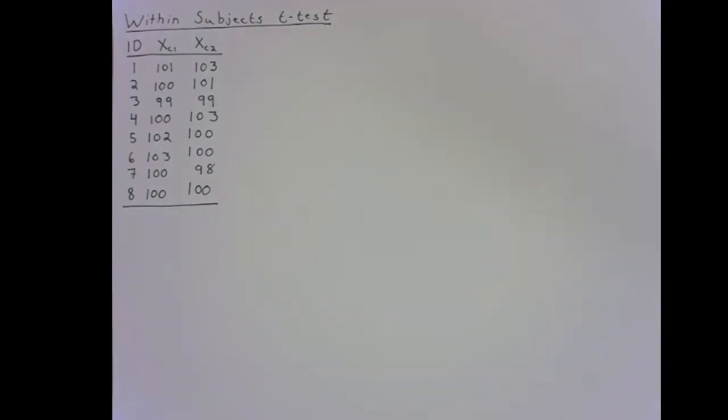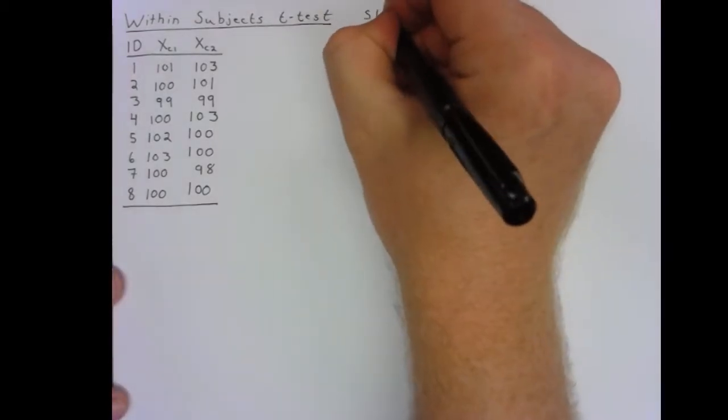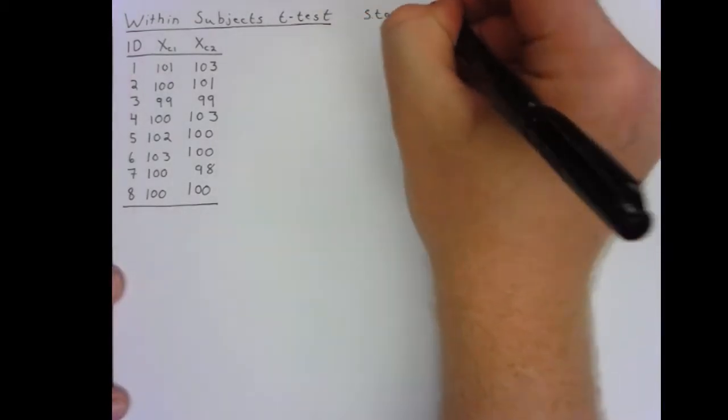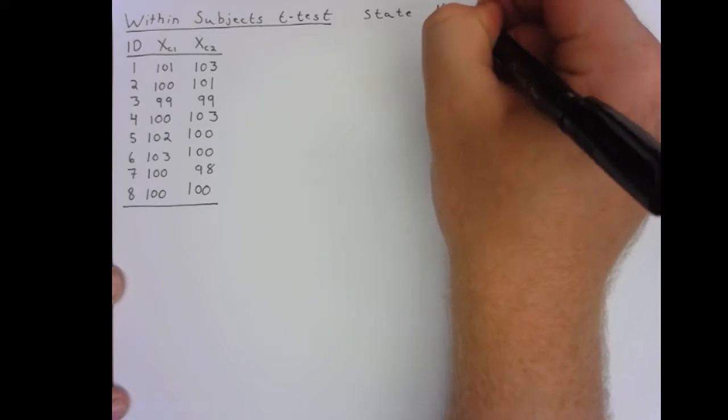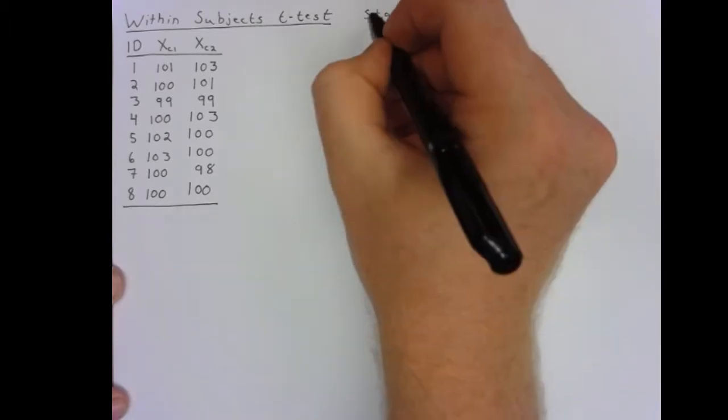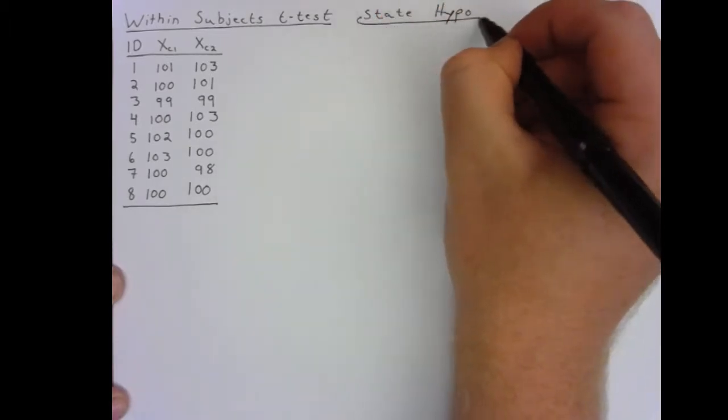Whenever you conduct a hypothesis test like this, it helps to follow a process. The process I use is based on a textbook called Statistics for the Behavioral Sciences by Frederick Graffiteer and Larry Walnew. With that in mind, let's get started on this t-test. The first thing that you're going to need to do is actually go ahead and state your statistical hypotheses. Note that these are not the scientific hypotheses based upon what you think the cognitive enhancer is going to do. They are the statistical hypotheses.